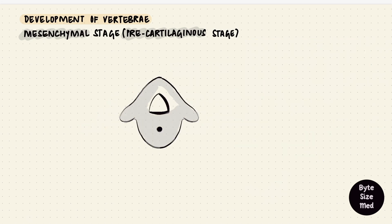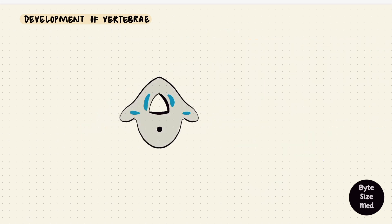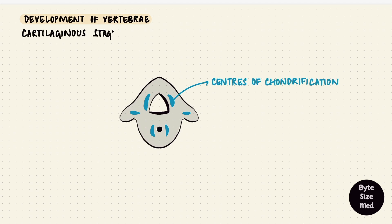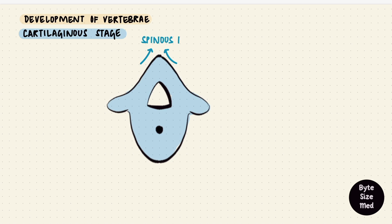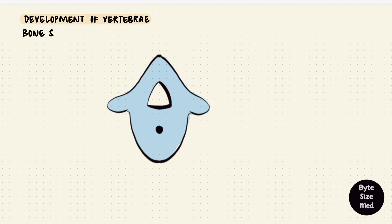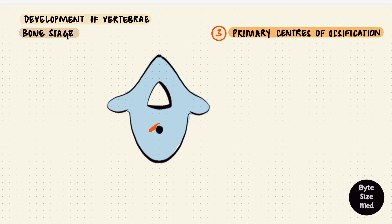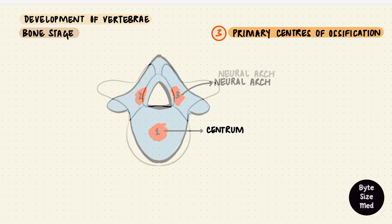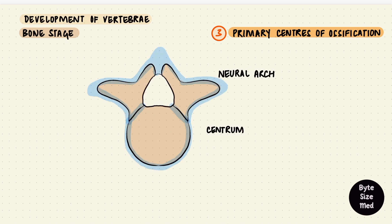Now we have something that looks like a vertebra, and it develops centers of chondrification, becoming cartilage. The spinous process and transverse processes form by extensions of the chondrification centers in the neural arch. So from a mesenchymal vertebral column we now have a cartilaginous column. From cartilage we form bone through ossification centers. The primary ossification centers are three in number: one for the centrum and one each for the neural arches — one on either side.